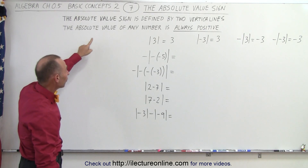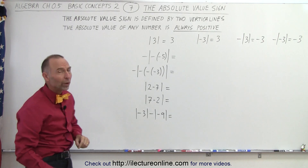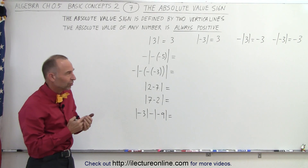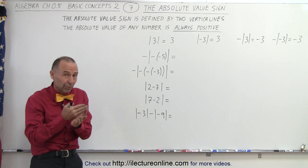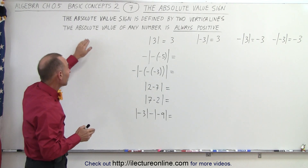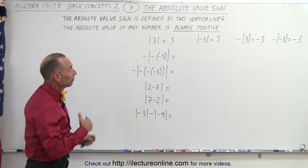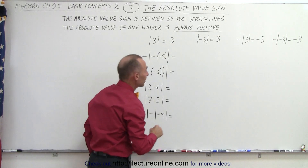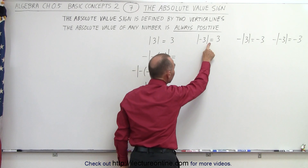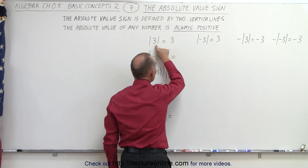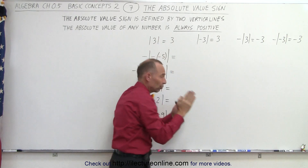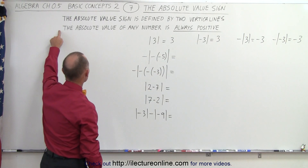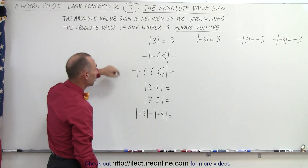In other words, the absolute value of any number is always positive. But this is where it gets a little bit tricky, because there are different representations where even though we may end up with a negative result, that doesn't violate this condition. For example, if we take the absolute value of 3, we get a positive 3. If we take the absolute value of negative 3, we still get the positive value of 3. So it doesn't matter if you place a 3 or a negative 3 between the two vertical lines — you end up with a positive value, which makes this statement true: the absolute value of any number is always positive.